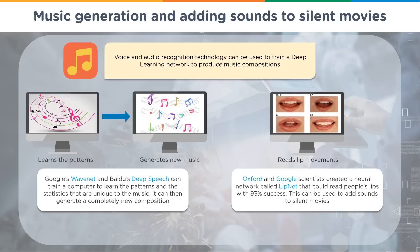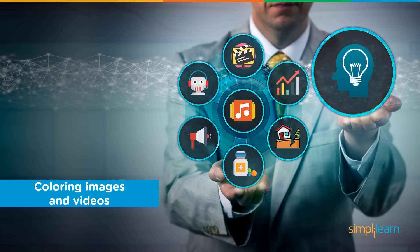Oxford and Google scientists created a neural network called LipNet that can read people's lips with 93% success. This can be used to add sounds to silent movies — it would be fun to hear what people were actually saying. On a more serious note, this would also allow surveillance equipment to capture what people are saying even when they're far away, as long as their lips are visible.